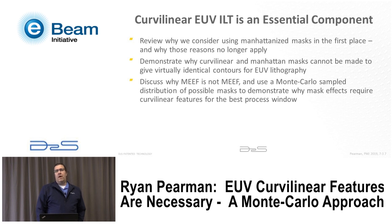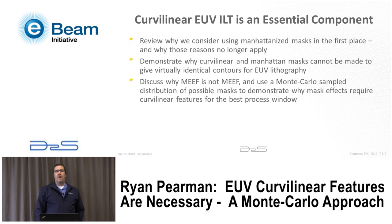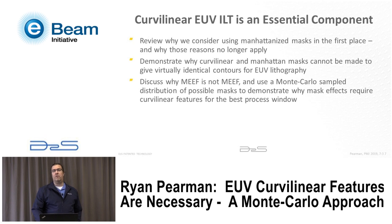We'll talk about three things in this discussion. We'll review why we actually had to use Manhattanized features — at least historically — and why that's not true today. Then we'll talk about why EUV is different from immersion lithography and why we cannot make curvilinear and Manhattan shapes consistent for EUV. Finally, we'll talk about mask variability and introduce the Monte Carlo studies to show the 75% process window improvement.